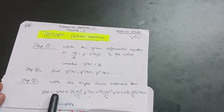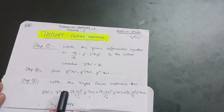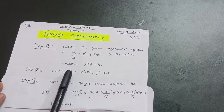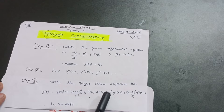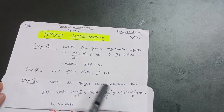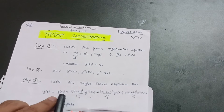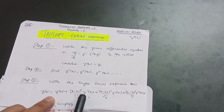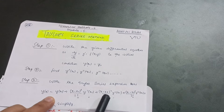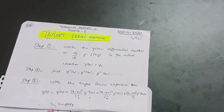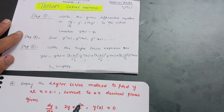Step three: write the Taylor series expansion using the general formula. At the end of the method, put down the values in: y(x) = y(x₀) + (x − x₀)/1! · y'(x₀) + (x − x₀)²/2! · y''(x₀) + (x − x₀)³/3! · y'''(x₀), and so on. The powers go 1, 2, 3 — easy to remember. Then simplify.